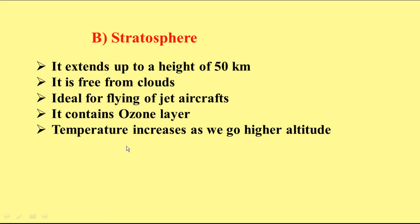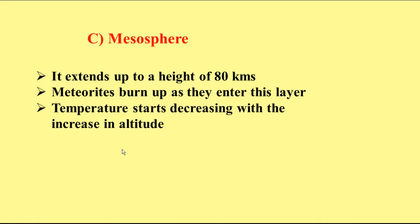The third layer is the mesosphere, which extends from the end of the stratosphere up to a height of 80 kilometers. Meteorites burn up as they enter this layer. In terms of temperature change, the mesosphere is similar to the troposphere — temperature starts decreasing with an increase in altitude. No important activities take place in the mesosphere.